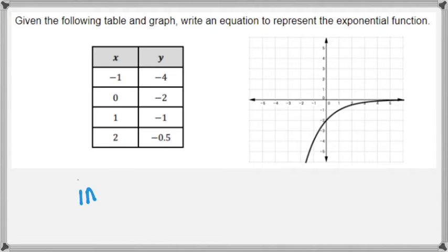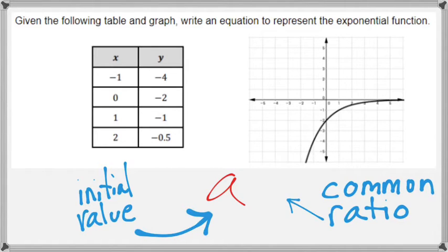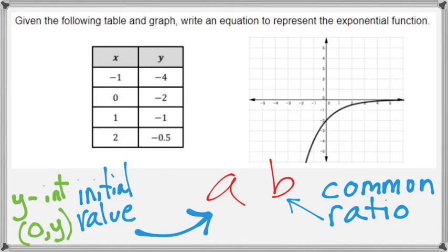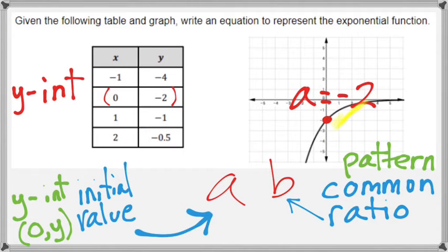In this example, the first thing we want to start with is finding the initial value, which is a. We have a graph and a table representing the same function. We also want to find our common ratio, represented by the variable b. The y-intercept a is going to be (0, −2), because as we can see on the table, x has a value of 0 and the corresponding y-value is negative 2. We can also see on the graph that a equals negative 2, crossing the y-axis right there on that red dot.